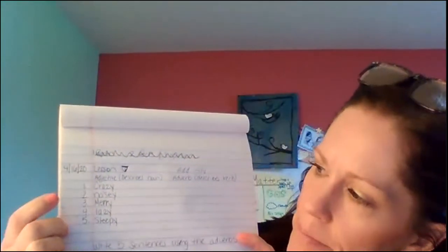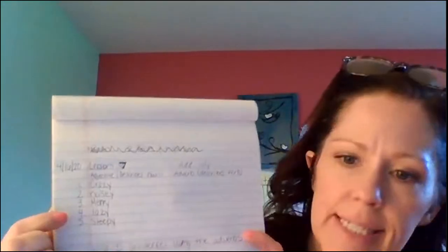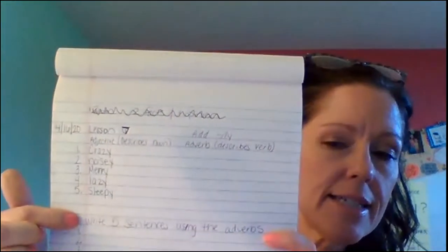We're going to write these adjectives: crazy, noisy, merry, lazy, and sleepy. Okay. Next to the adjective, you're then going to write the adverb. How do I get the adverb? By adding our suffix I-L-Y.